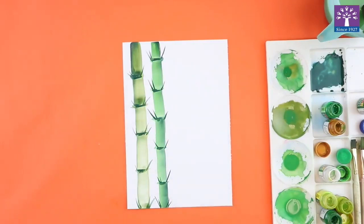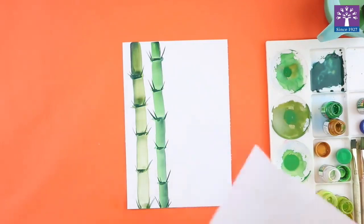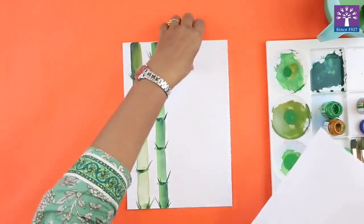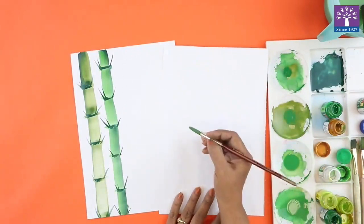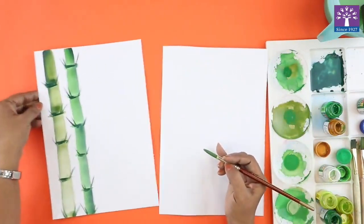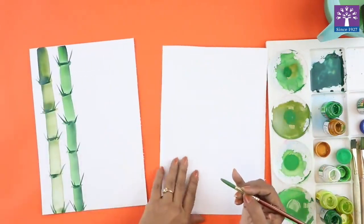If you want, you can draw a few leaves. I will quickly show you on this rough piece of paper. Allow this to dry for some time and I will show you how to draw the leaves.